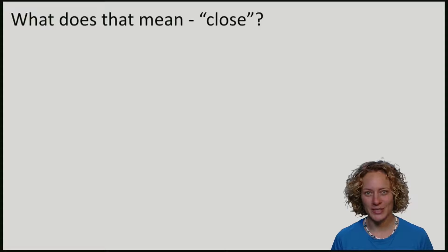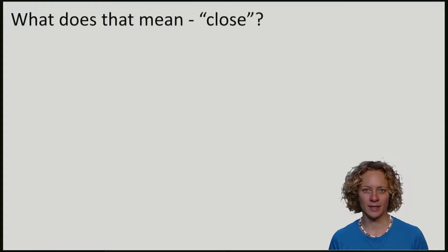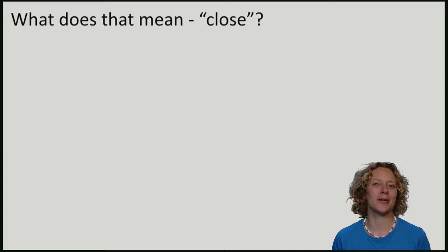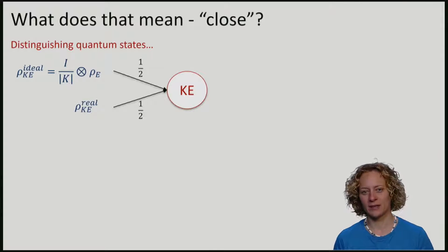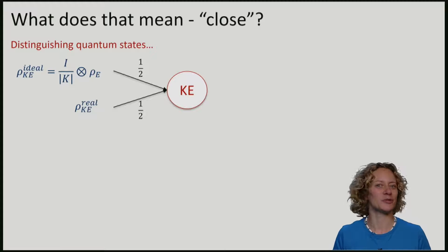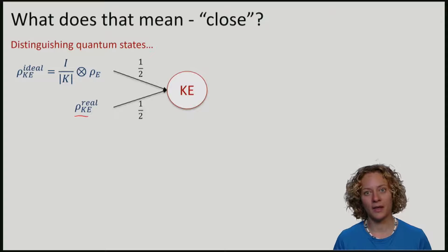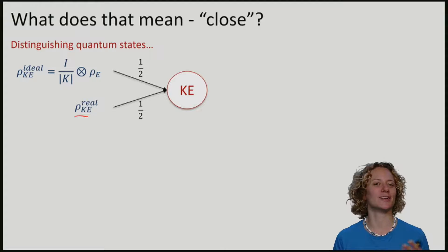To define a useful measure of closeness, we will think about distinguishing states, namely the real and the ideal state. To find a good measure, let's first consider a small game. Imagine that I prepare the system KE by either running the ideal protocol, the magic protocol that produces exactly the state that I want, or I run the real protocol.